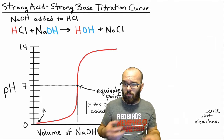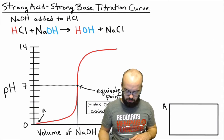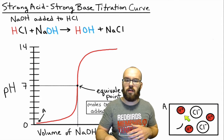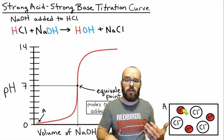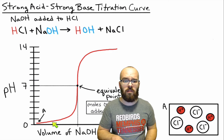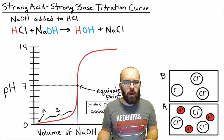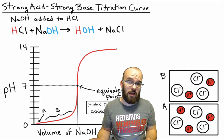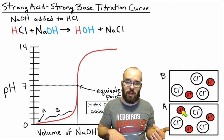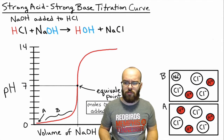Another thing you need to know is what ions are present in solution at different points along the titration. At the very beginning (point A) we just have hydrochloric acid, so we only have hydrogen ions and chloride ions in solution — hydrogen ions in red and chloride ions in white. As we add sodium hydroxide we get into the next range (point B): we still have chloride ions as spectators, we still have some hydrogen ions, but every hydroxide ion we add neutralizes one of those hydrogen ions. We'll also have some sodium ions from the sodium hydroxide, but those are just spectators.